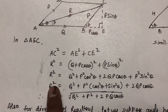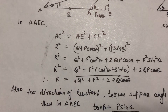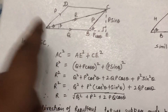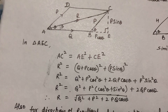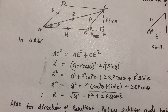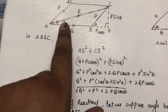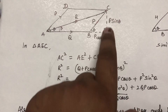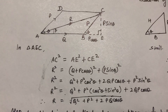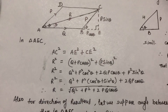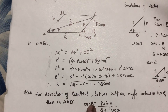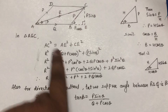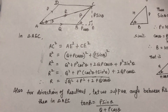Since sin² θ plus cos² θ equals 1, R equals the square root of Q² plus P² plus 2PQ cos θ. To find the direction of the resultant: the angle between P and Q is θ, but if we need the direction of R with respect to Q, we call this angle β. In triangle ACE, tan β equals perpendicular upon base, where the perpendicular is P sin θ and the base is Q plus P cos θ. So tan β equals P sin θ divided by Q plus P cos θ.